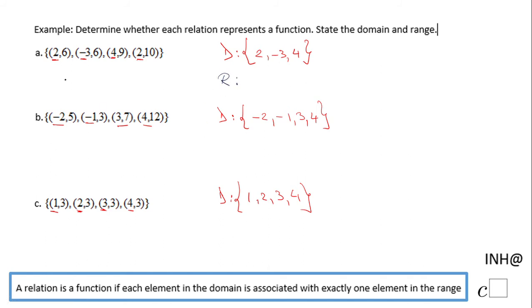1, 2, 3, and 4. Now let's go to the range. The range of these relations, I'm gonna start with the first one, is represented by the second number. So we notice here 6, 6, 9, 10, 6. I said 6 one more time so I don't have to write it, 9 and 10.